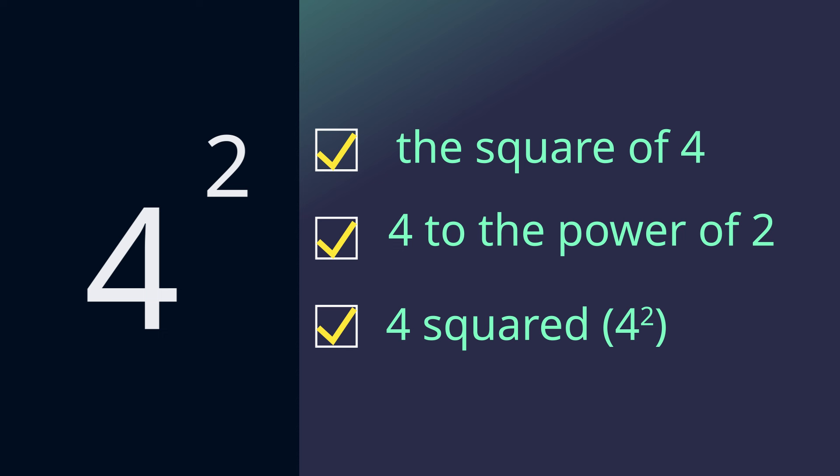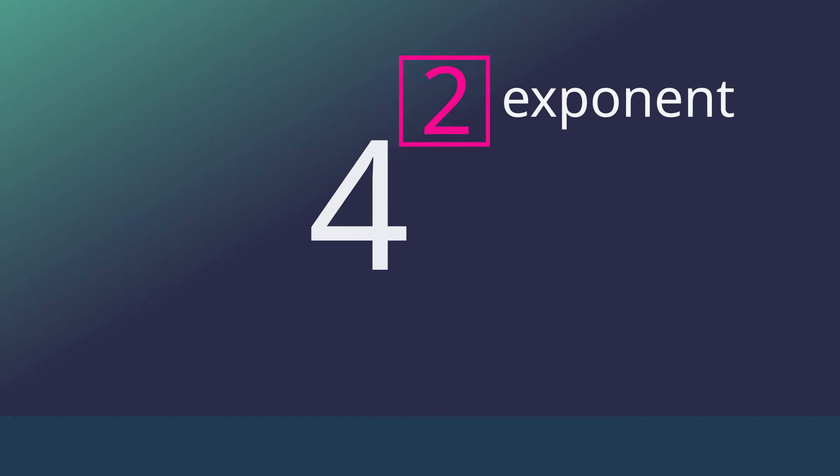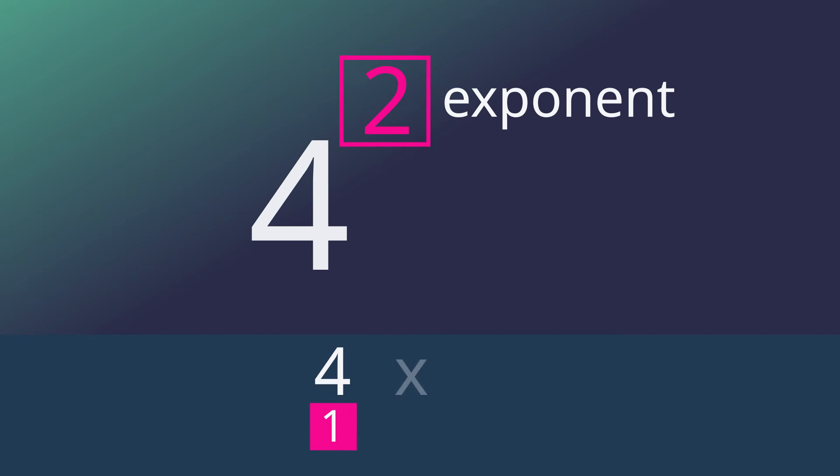Let's look at how we write a square number. Using the example 4 squared, we will write it as 4 to the power of 2. The small 2 is called an exponent and tells us how many times to multiply the number by itself.